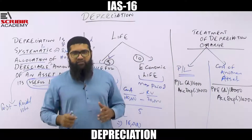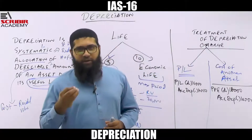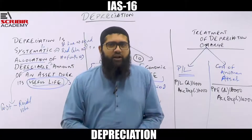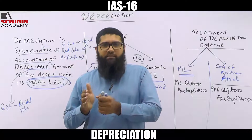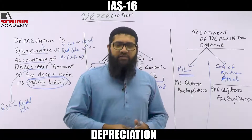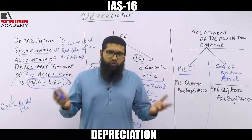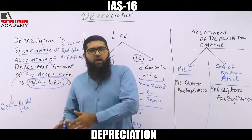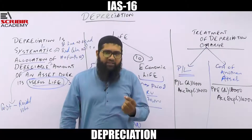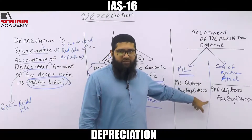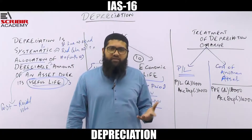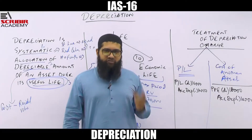To summarize: when you depreciate an asset, you depreciate it over its useful life. Useful life is the period over which you want to benefit from the asset, while economic life is the maximum period the asset can provide benefit. For the depreciation expense, there are two treatments: recognize it as an expense in the P&L, or capitalize it as part of the cost of another asset. Thank you very much — stay tuned for future videos.